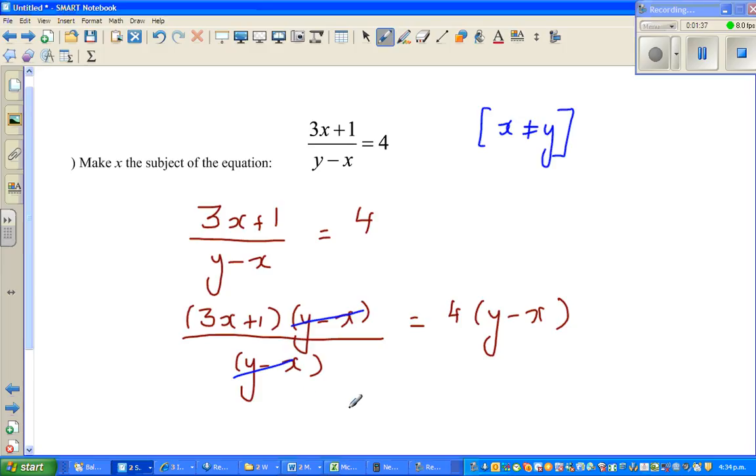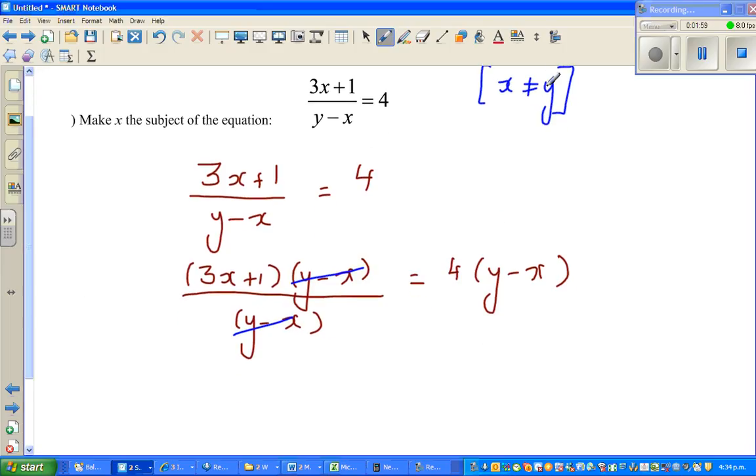You can cancel only when it's not zero. In other words, the denominator cannot be zero. If x equals y, then y - x will become zero. So we are accepting here, it is understood that y is not equal to x. The next step would look like this.